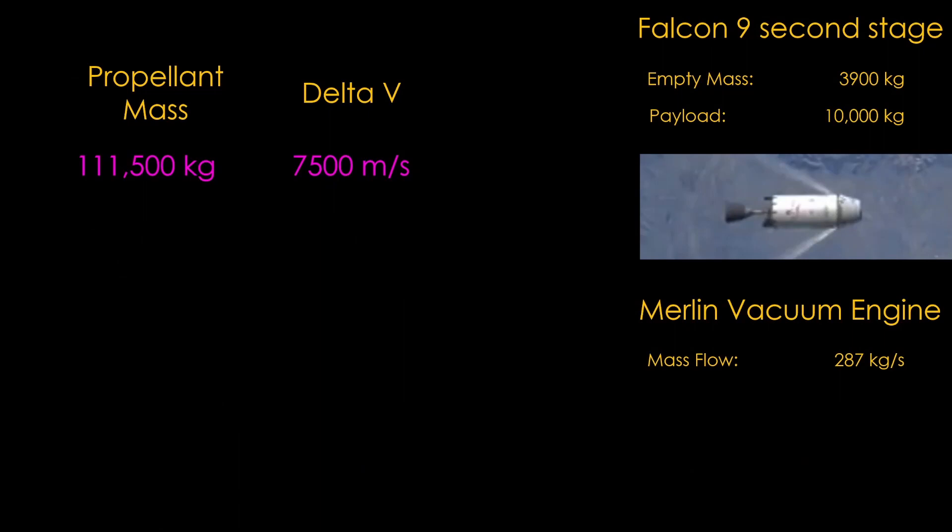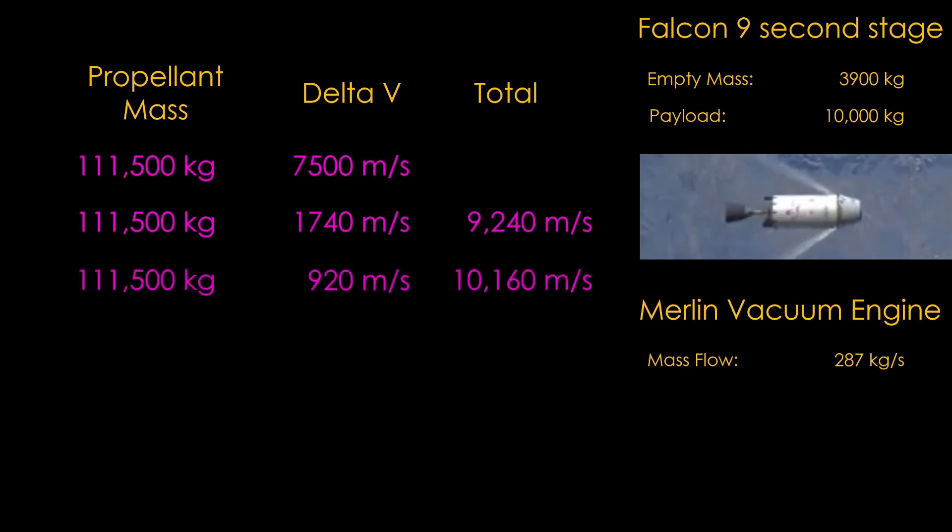Let's return to our study of the Falcon 9 second stage. We found that the full propellant load gave us a delta V of around 7500 meters per second with a 10,000 kilogram payload. But say we need more delta V. We somehow expand the stage so it carries twice as much propellant. How much delta V do we get out of that second 111,500 kilograms? I'm hoping you aren't saying double. In fact, it's only 1740 meters per second, for a total of 9240 meters per second. If you keep going farther with this exercise, the third increment of 11,500 kilograms of propellant only nets 920 meters per second of additional delta V.